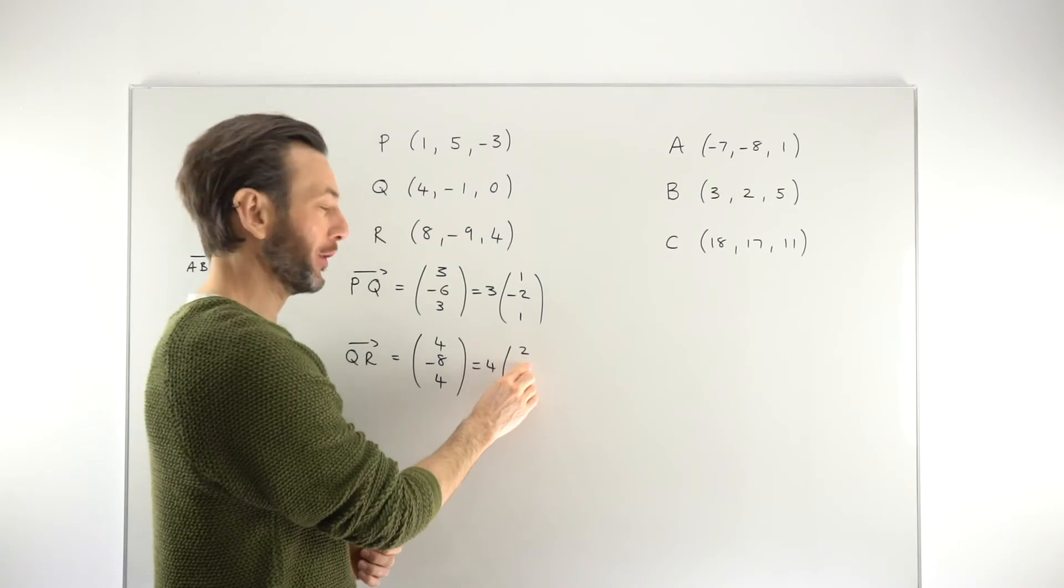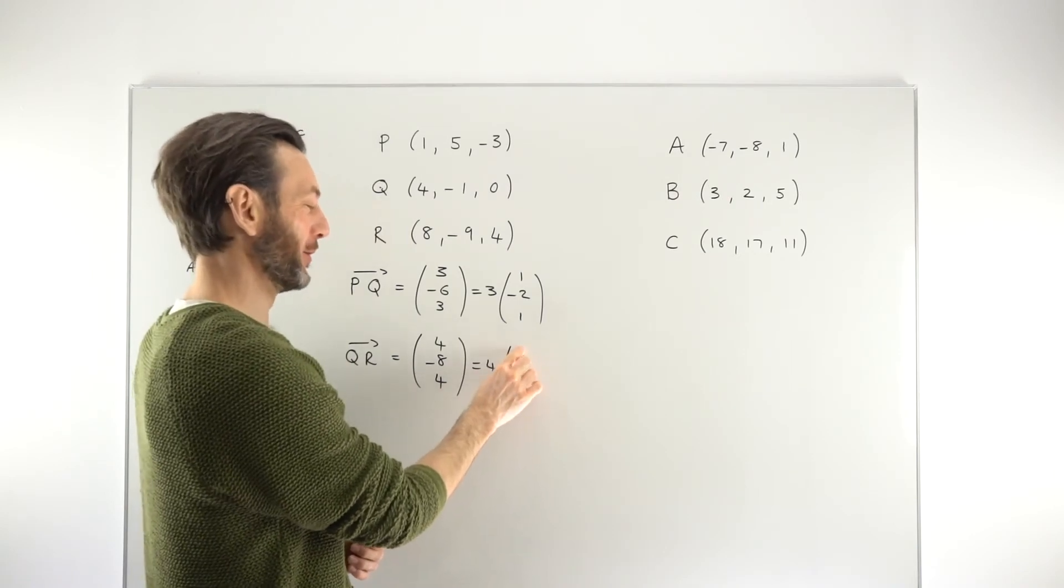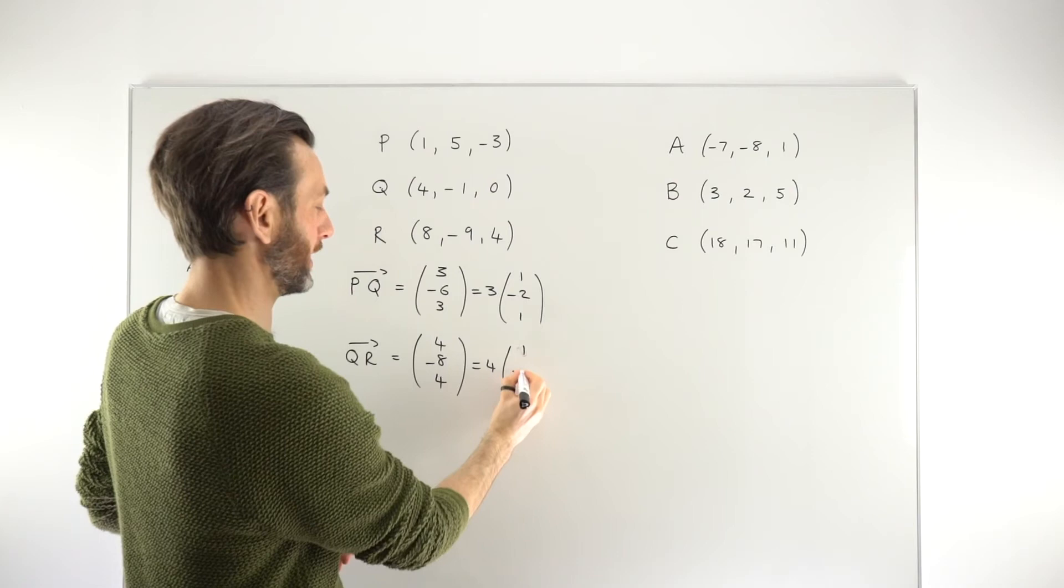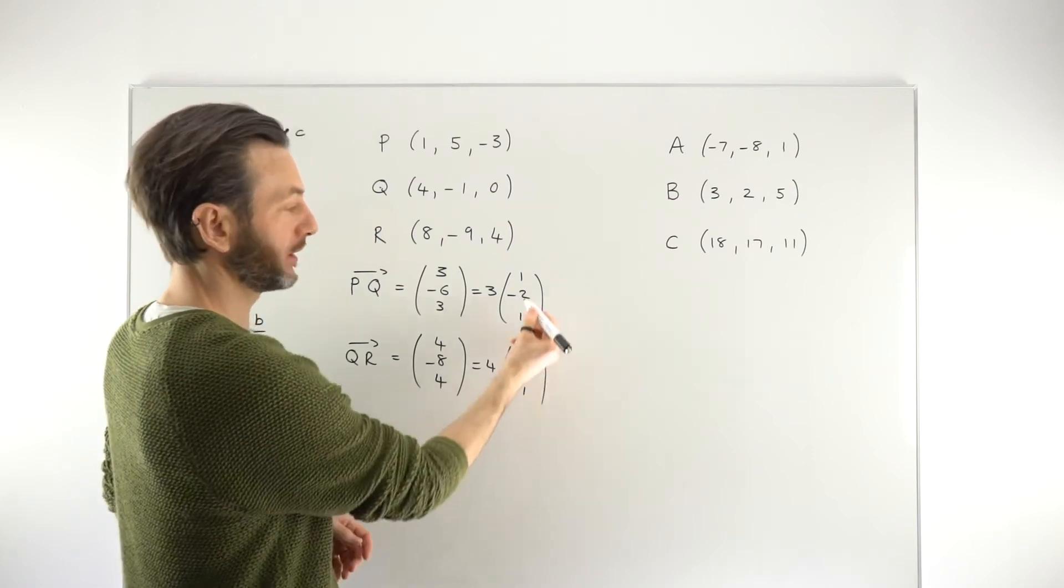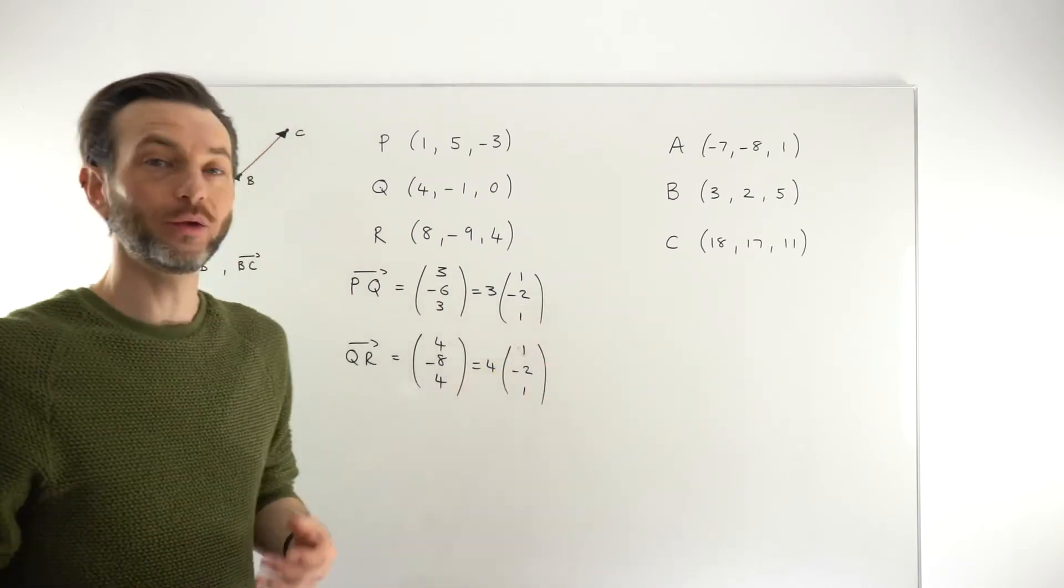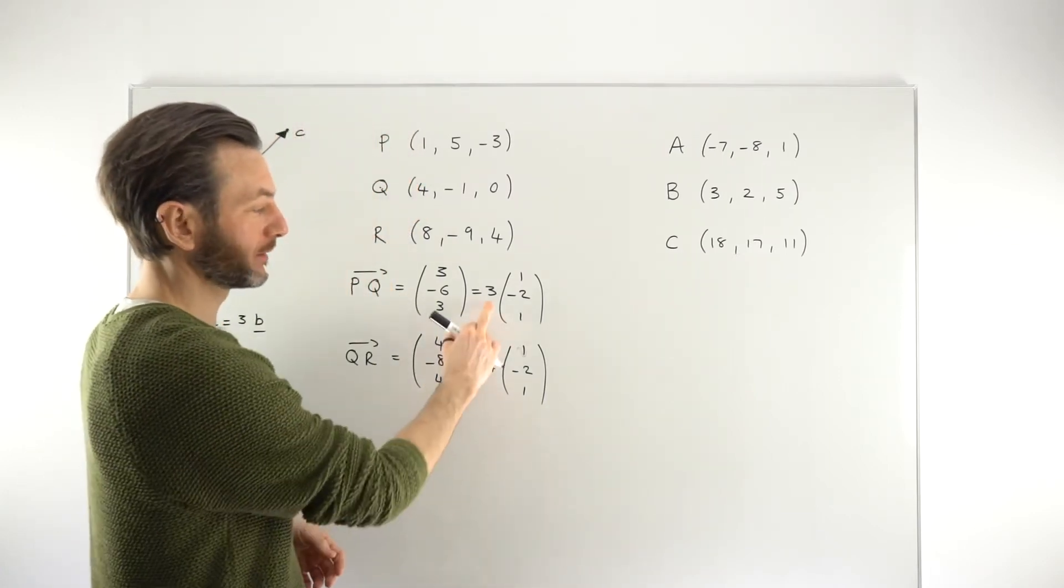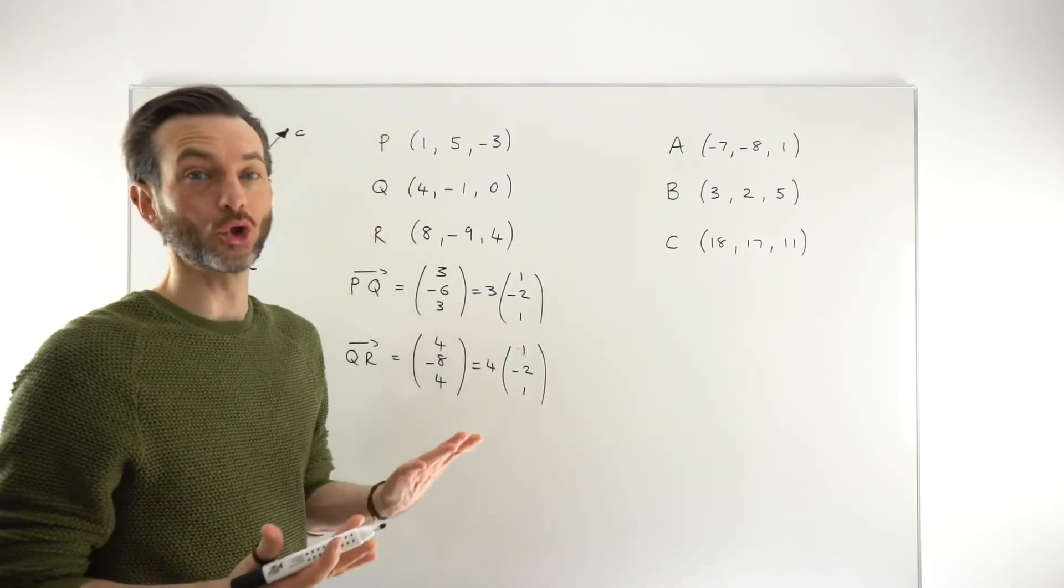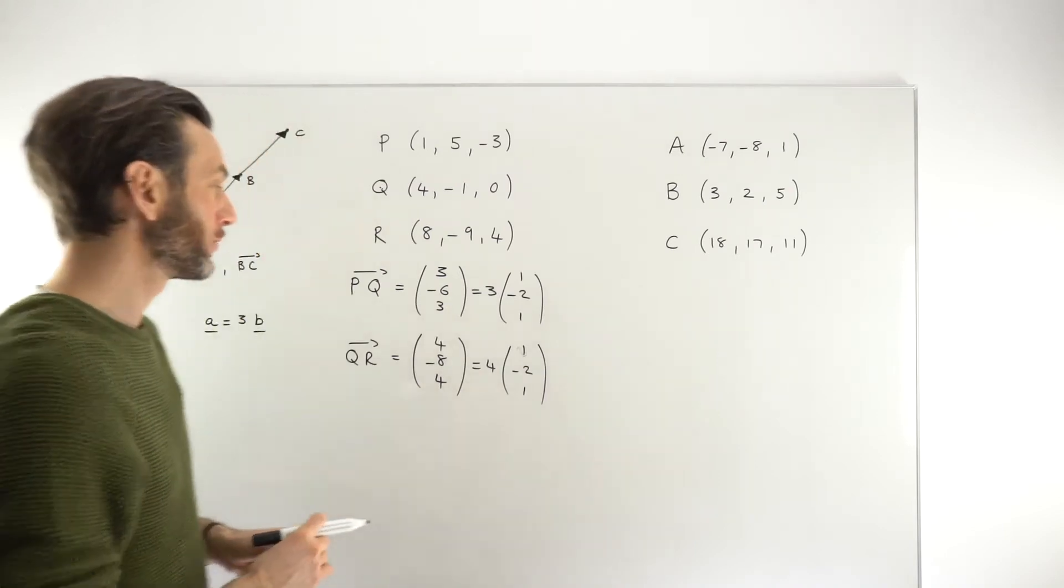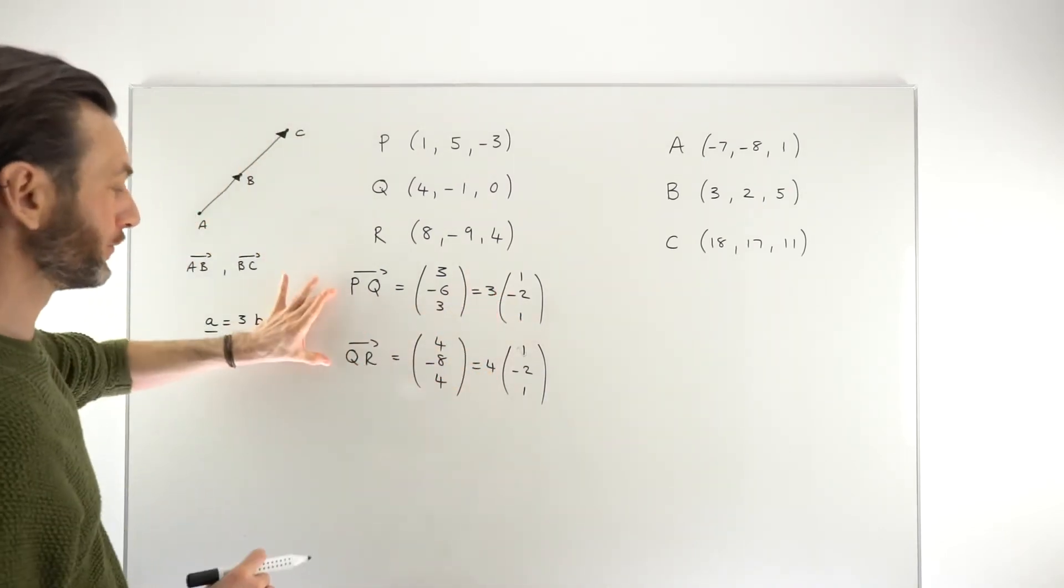My counting went a little bit off there. That was meant to be a 1, not a 2. So 1, and then minus 2, and then 1. So notice that we've ended up with the same base vector. If the two vectors have got the same base vector, but a different scalar, a different multiple, then that is good enough to show that they are parallel. So this is good enough to show that these two vectors are parallel.